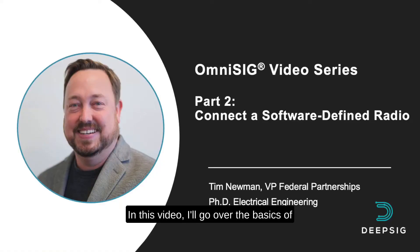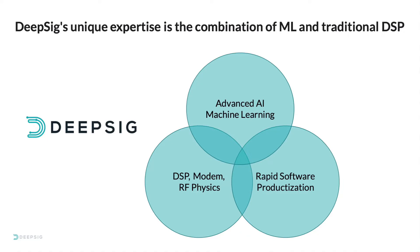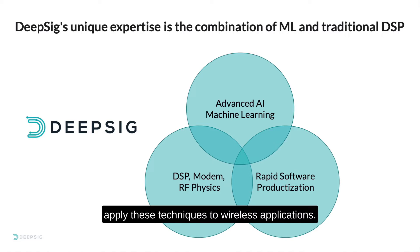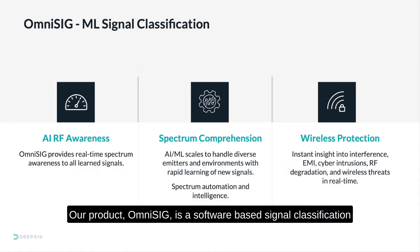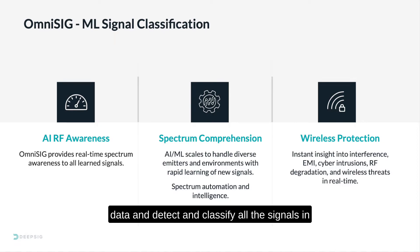In this video, I'll go over the basics of software-defined radio and how it's used by OmniSig to collect RF and classify signals in your environment. As a quick reminder, here at DeepSig we develop artificial intelligence techniques and apply these techniques to wireless applications. Our product, OmniSig, is a software-based signal classification application that uses deep neural networks to ingest RF data and detect and classify all the signals in the RF environment provided to it.